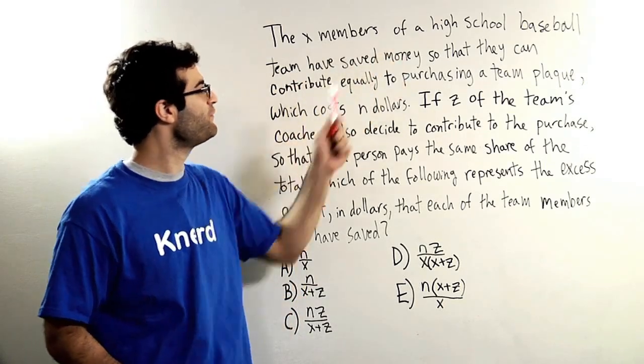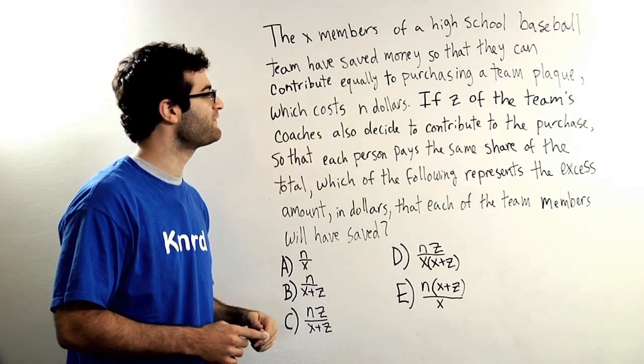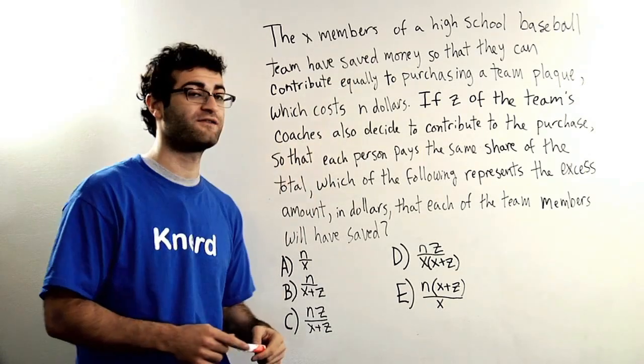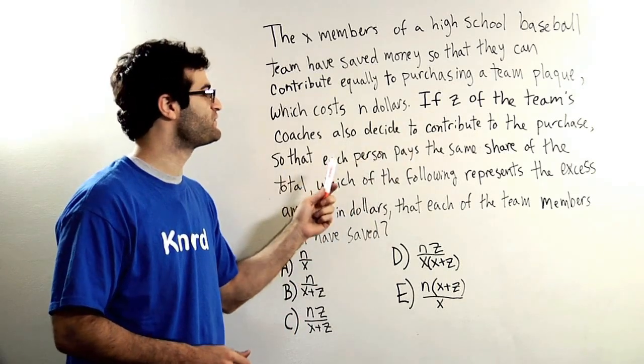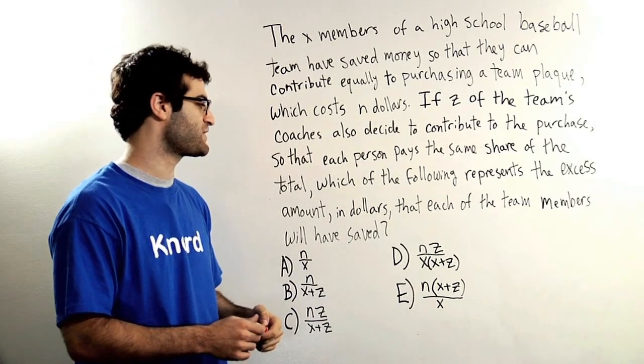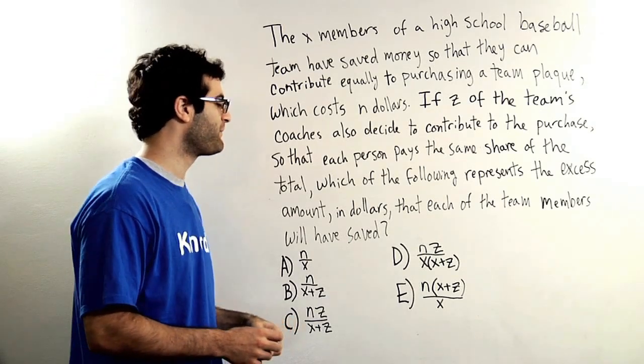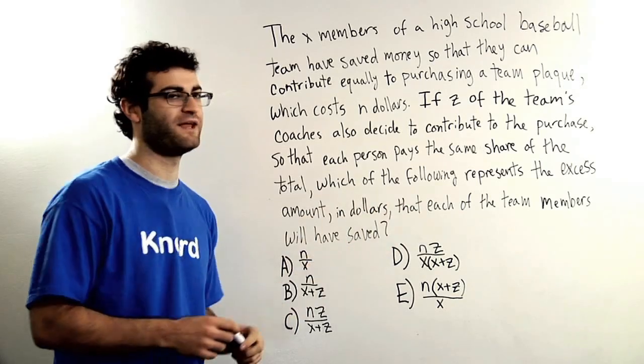The x members of a high school baseball team have saved money so that they can contribute equally to purchasing a team plaque which costs N dollars. If Z of the team's coaches also decide to contribute to the purchase, so that each person pays the same share of the total, which of the following represents the excess amount in dollars that each of the team members will have saved?